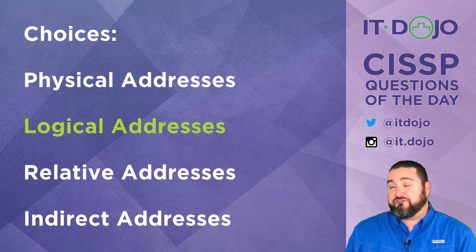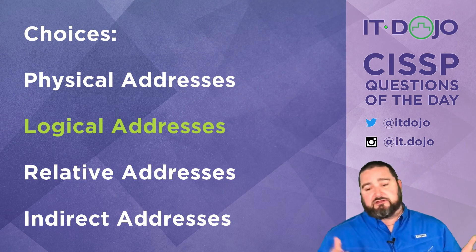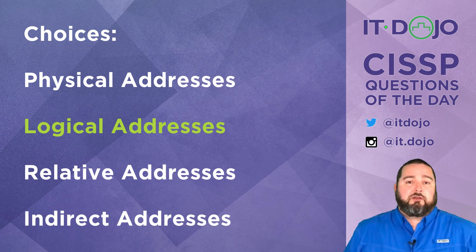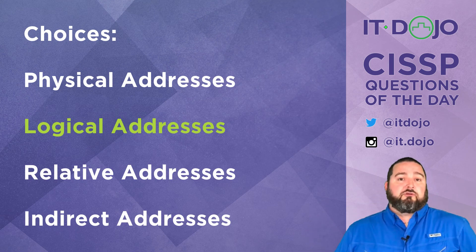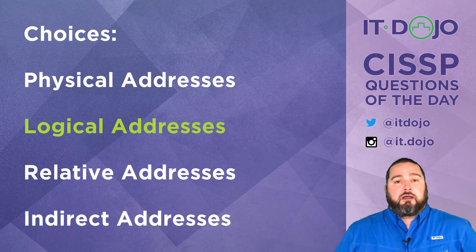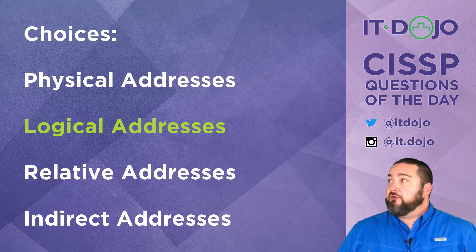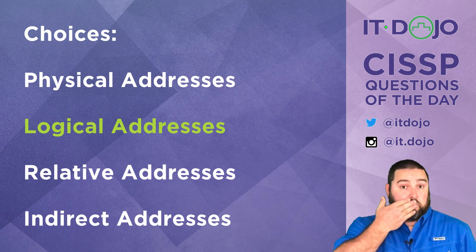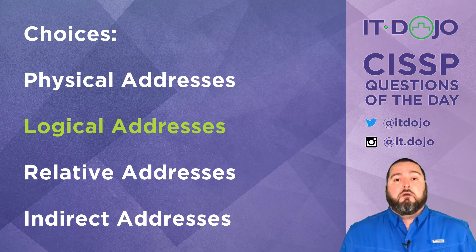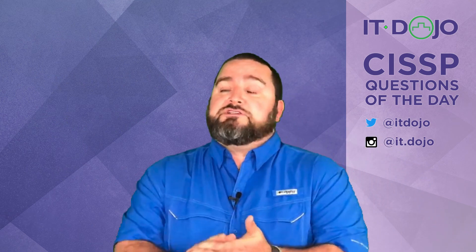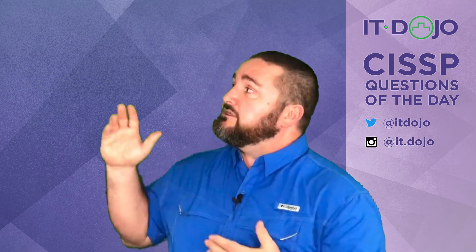The last choice on the list was indirect addresses — I made that up; I just wanted a fourth answer choice. Two more questions down.